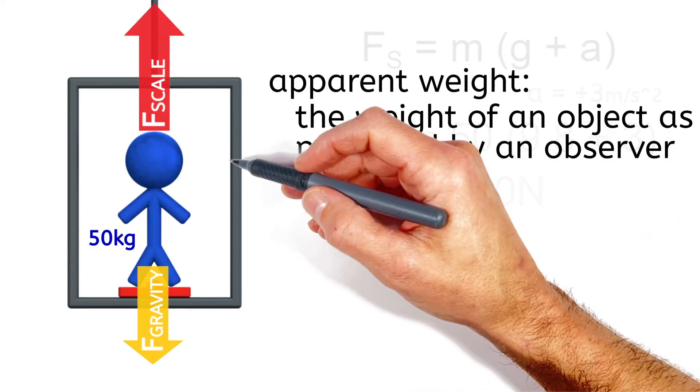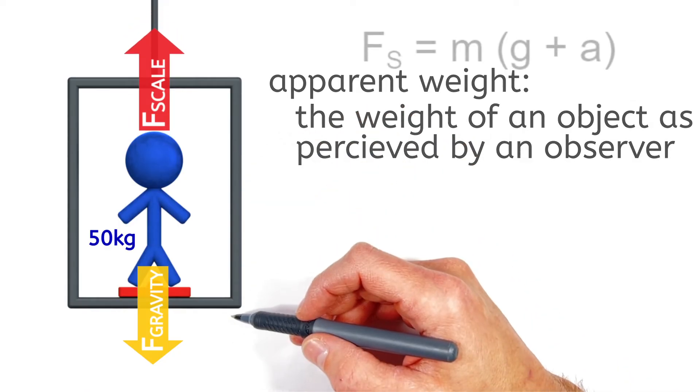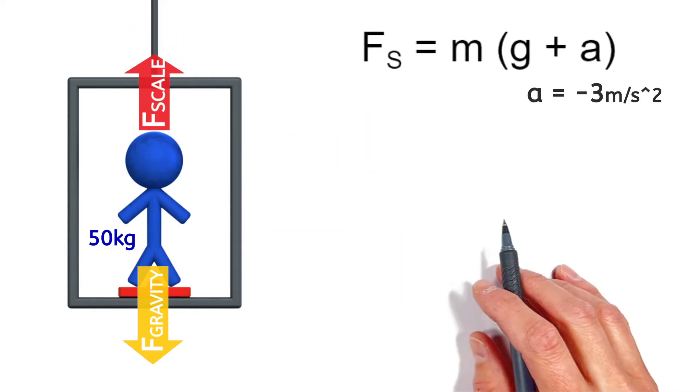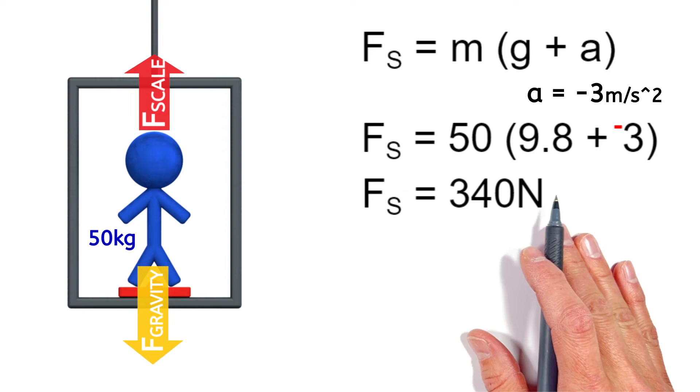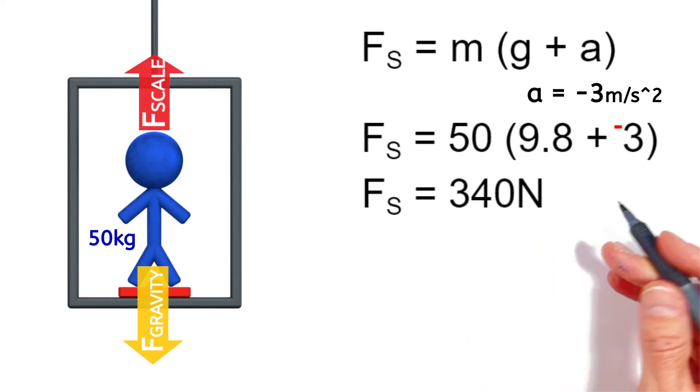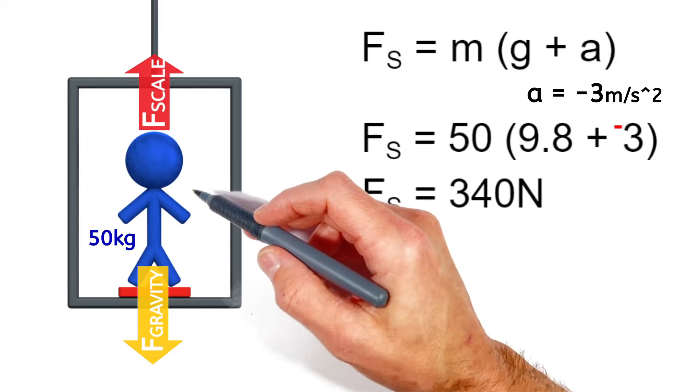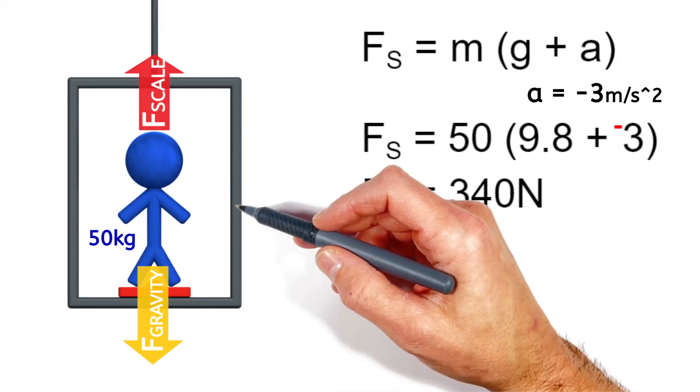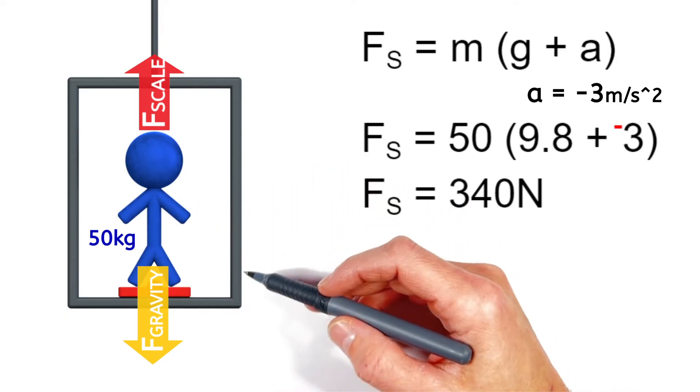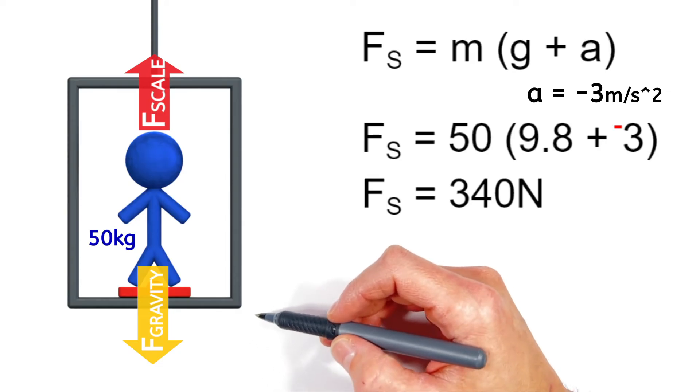Now if we change this and have the elevator accelerate downward at 3 meters per second squared, going back to our equation, a is now equal to negative 3 because it's accelerating downward or in the negative direction. And the reading on the scale or the apparent weight of the person is 340 newtons. Our person over here feels lighter even though gravity is unchanged. It's still mg or 490 newtons.